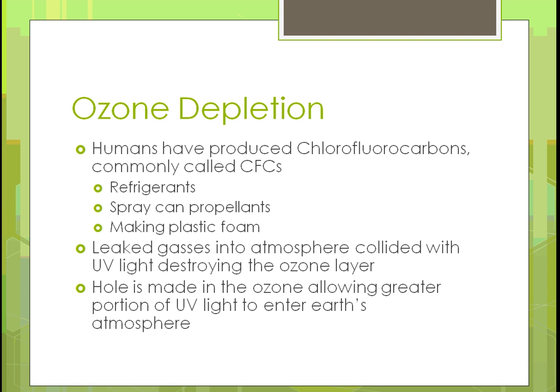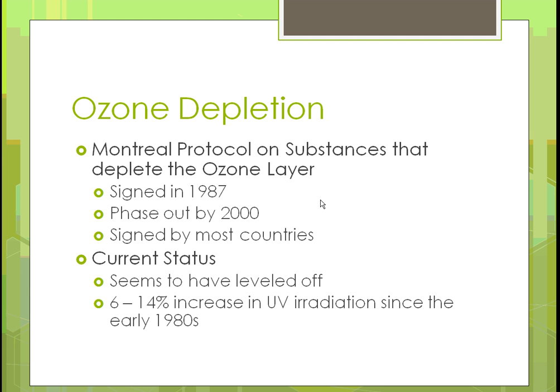That ozone hole is allowing more UV light into the atmosphere, and we want to prevent further damage. In response, a meeting was held in 1987 called the Montreal Protocol, which bans and phases out substances causing the CFC-related ozone depletion. It was signed by most countries. Currently, the depletion of the ozone layer has leveled off, with a 6 to 14 percent decrease in UV irradiation since the early 1980s. The ozone hole appears to be getting smaller over time.